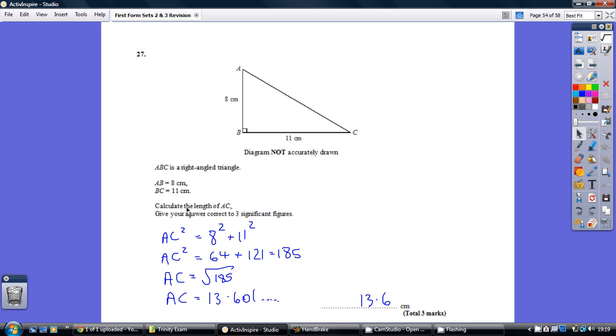Now with Pythagoras we're saying that the length of the two shorter sides squared equals the length of the hypotenuse squared. So 8 squared plus 11 squared equals AC squared. So we write it down like this.